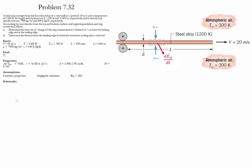Let's now evaluate at the position x equals 1 meter. Evaluating the Reynolds number at that position, we find it to be 2.62 times 10 to the 5, which is less than the critical value of the Reynolds number. Therefore the flow is going to be laminar.